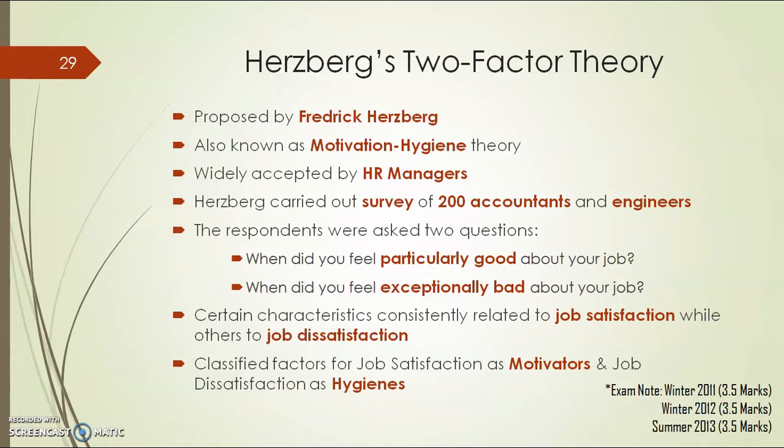What was the methodology of this theory? Herzberg carried out a survey of 200 accountants and engineers. During this research, respondents were asked two questions. The first question was: when did you feel particularly good about your job? And the second question was: when did you feel particularly bad about your job?